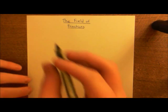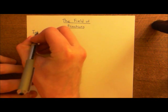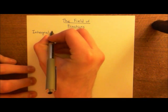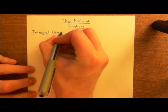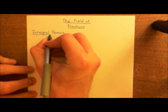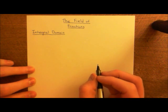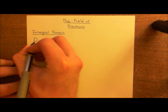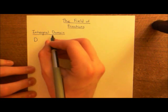An integral domain is an algebraic structure — basically a special commutative ring, often abbreviated just by D. Let's remind ourselves of what a commutative ring is.